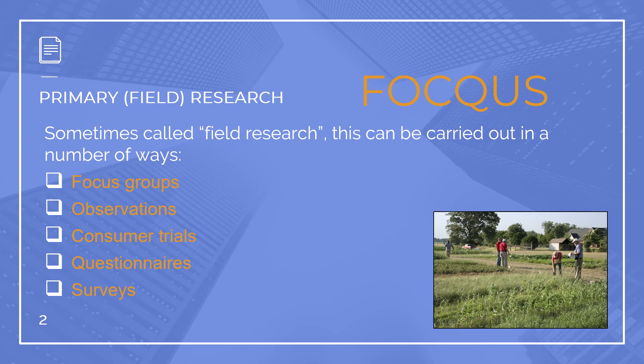Primary research is sometimes called field research, because literally people go out into the field — like a field trip, you go outside to do it yourself. Whether that means physically or digitally, it can be either way. The five different ways we can do this are: focus groups, observations, consumer trials, questionnaires, and surveys.